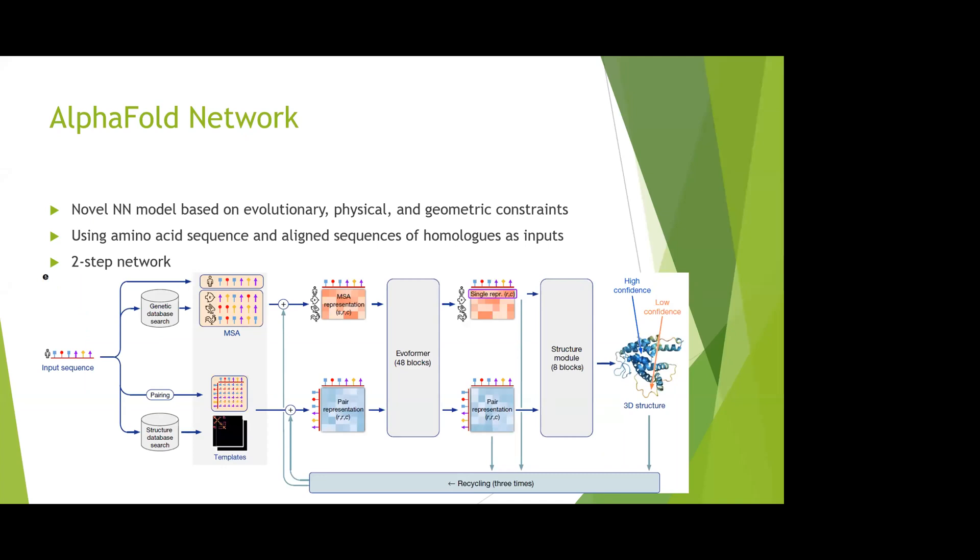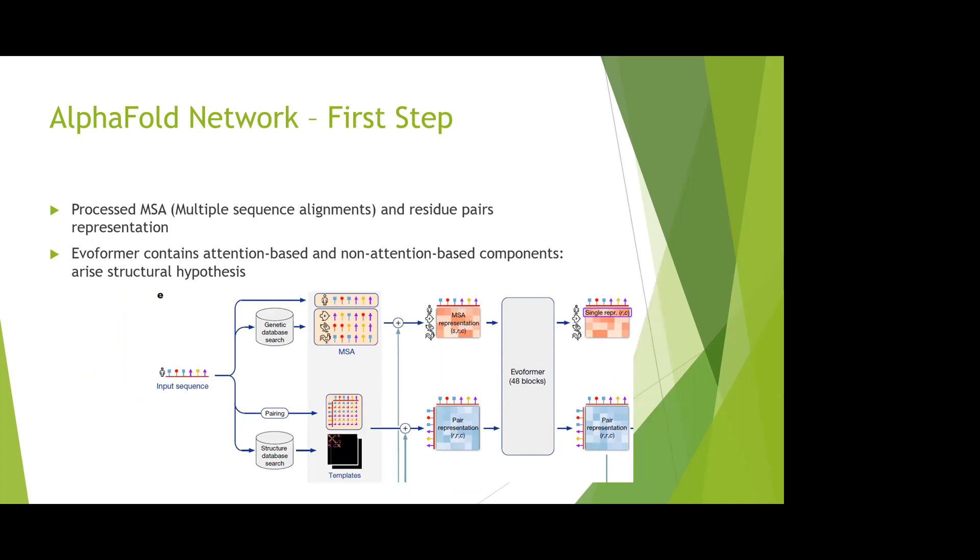Next we'll talk about the AlphaFold network technical details. This is a novel neural network model based on evolutionary, physical, and geometric constraints. It uses amino acid sequences and aligned sequences of homologues as input. The whole network can be considered in two stages. The first stage processes the input sequences. There are two kinds of representations: the MSA (multiple sequence alignments) representations and residue pair representations.